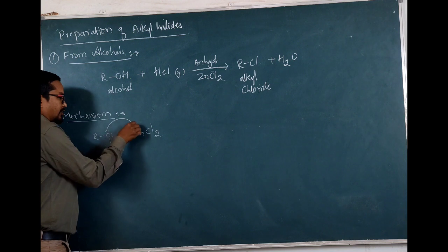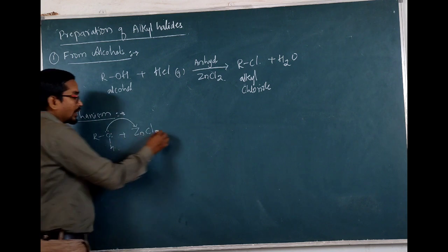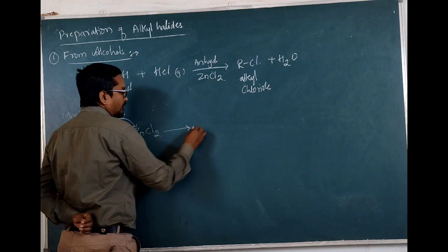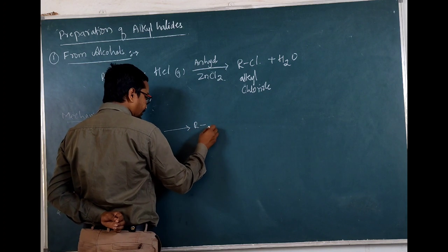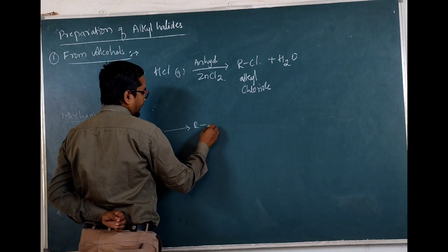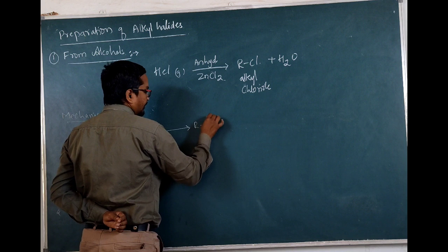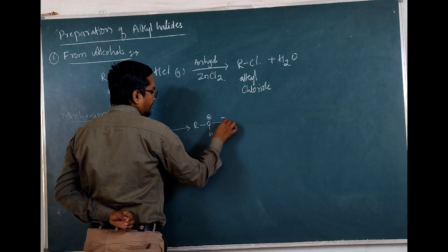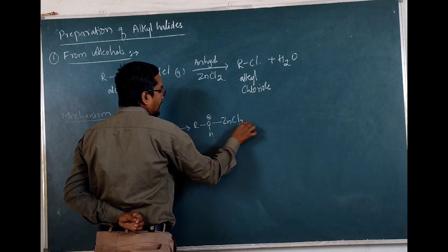These electrons are donated to ZnCl2, and hence it will lead to the formation of R — and we have the O, we have H, we have positive charge over it — we have Zn and we have Cl2.